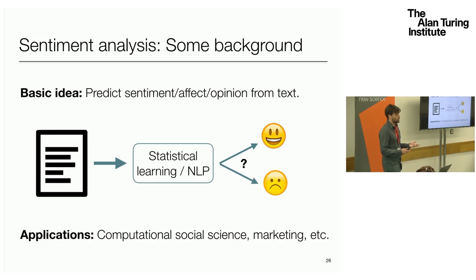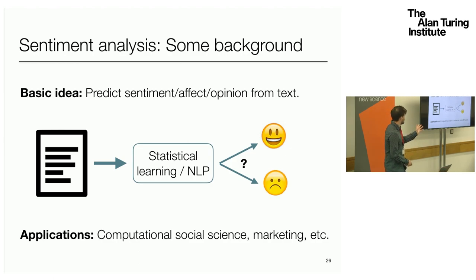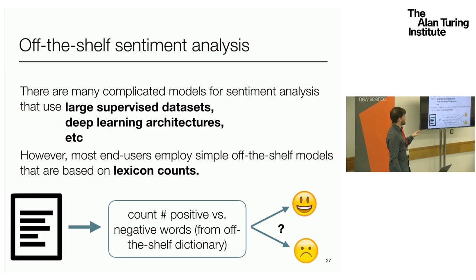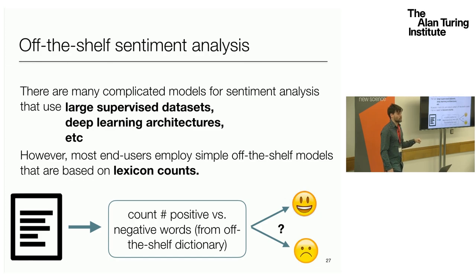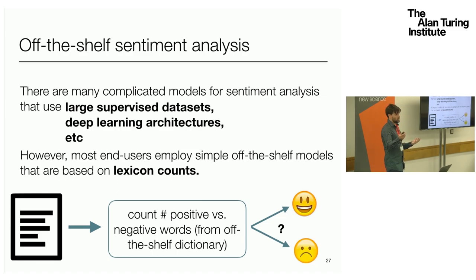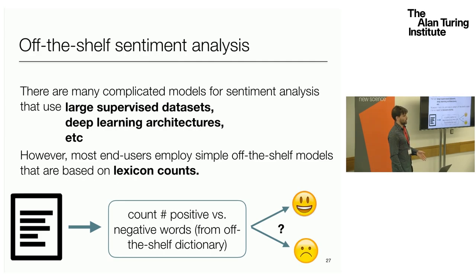Sentiment analysis is a very popular task in NLP where we're trying to predict the sentiment or emotion in a text. We take a review or a tweet and use some statistical technique to estimate whether it's positive, negative, or sometimes neutral. While there are very complicated approaches using deep learning and fancy machine learning architectures, when you look at what people actually use in practice — especially in industry and in computational social science — what they do is count positive and negative words from off-the-shelf dictionaries. The score assigned to a document is roughly the average of how many positive versus negative words it contains.